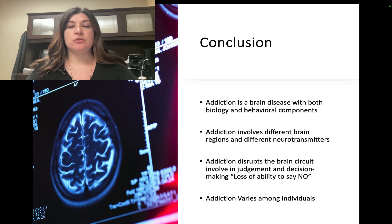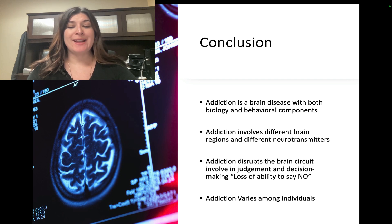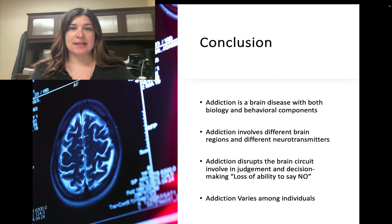In conclusion: one, addiction is a brain disease with both biological and behavioral components. Two, addiction involves different brain regions and different neurotransmitters. Three, addiction disrupts the brain circuits involving judgment and decision-making — individuals lose the ability to say no. And lastly, while anybody can become addicted to drugs and alcohol, addiction susceptibility varies among individuals.